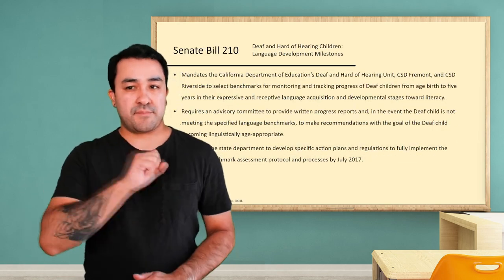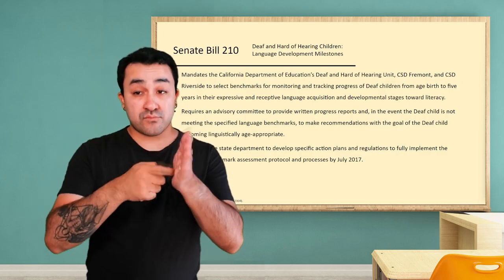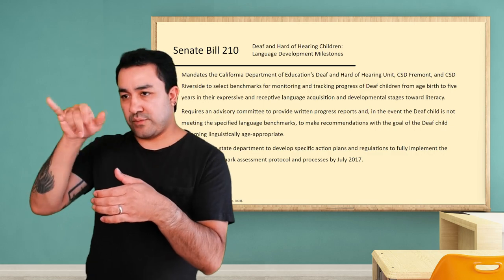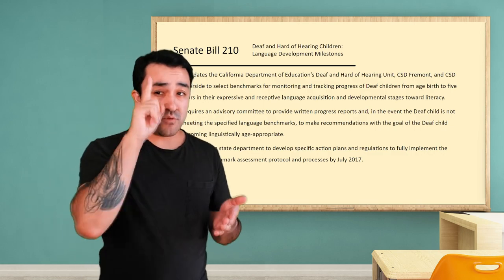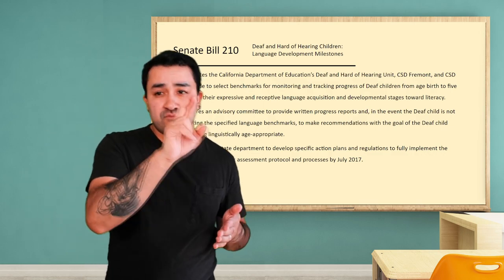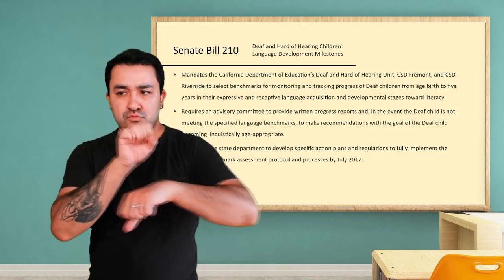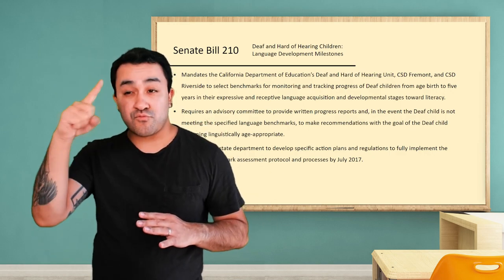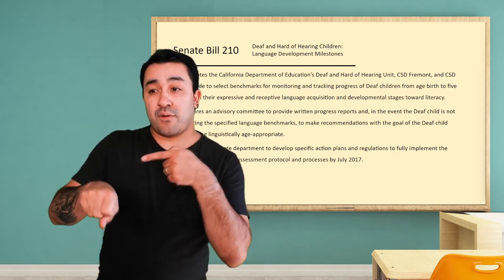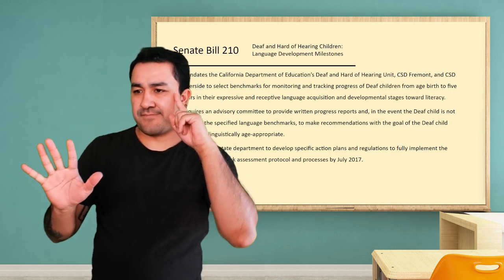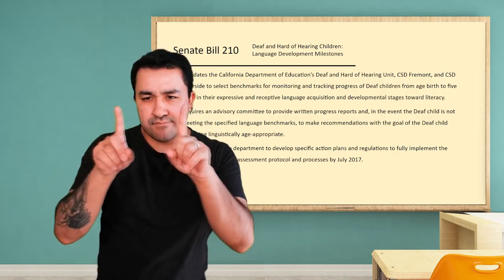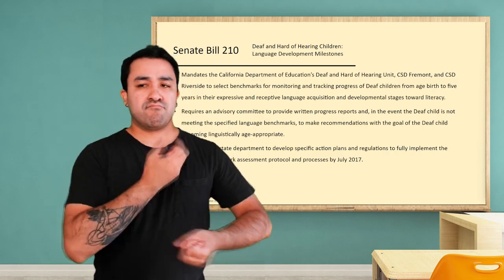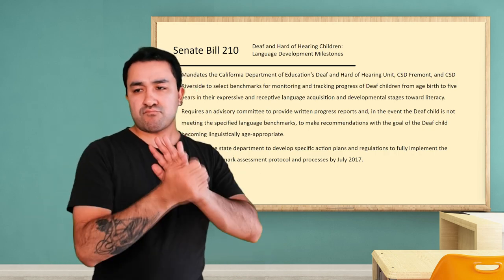The next major milestone would be Senate Bill 210. This law mandated the California Department of Education's Deaf and Hard of Hearing Unit to work with California School for the Deaf Fremont and California School for the Deaf Riverside to create benchmarks for monitoring and tracking the progress of deaf children from birth to age 5. The measures would assess and determine the child's expressive and receptive language acquisition and their development toward literacy.